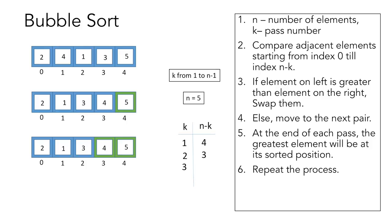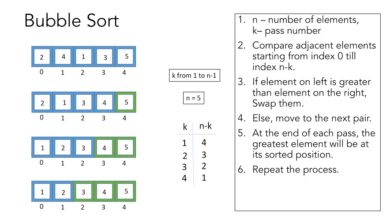In the third pass, n-k would be 2, so we make two comparisons from index 0 to index 2. As 2 is greater than 1, we swap them, then move to the next pair where 2 is smaller than 3, so no swapping. In the last pass, k equals 4 and n-k equals 1, so we only perform one comparison. The elements are already at their sorted positions, so there is no swapping, and we have successfully sorted our array.